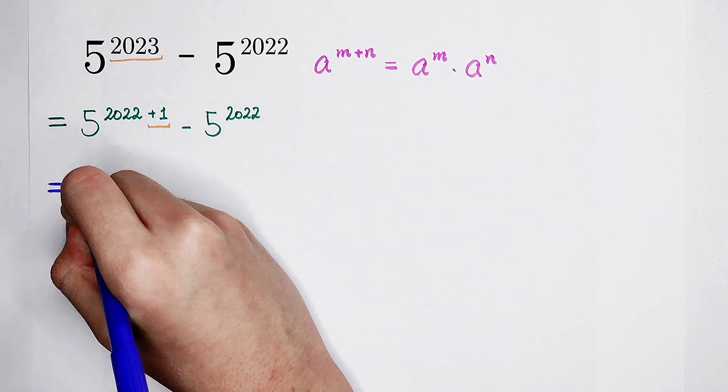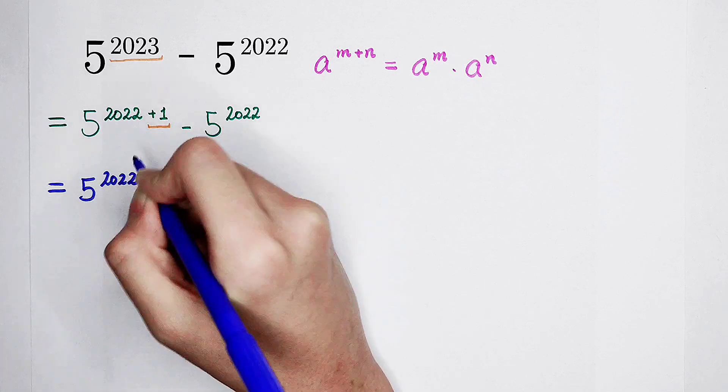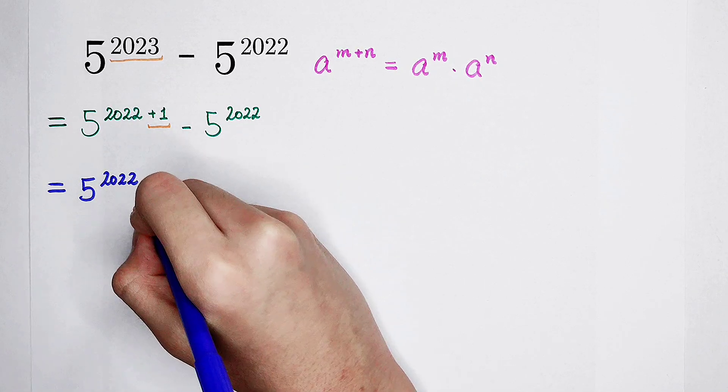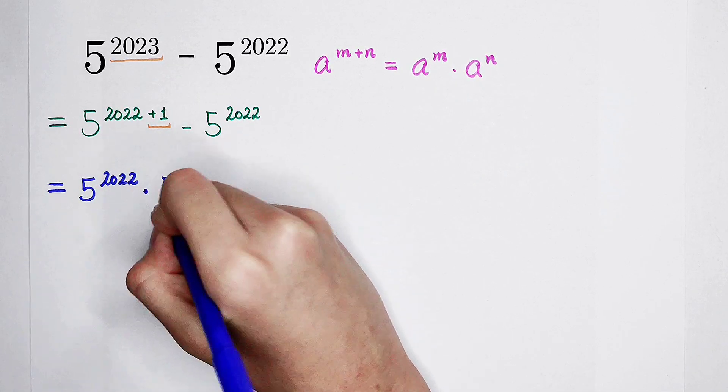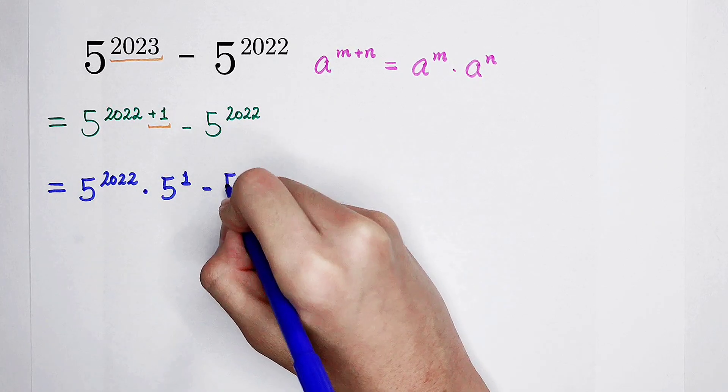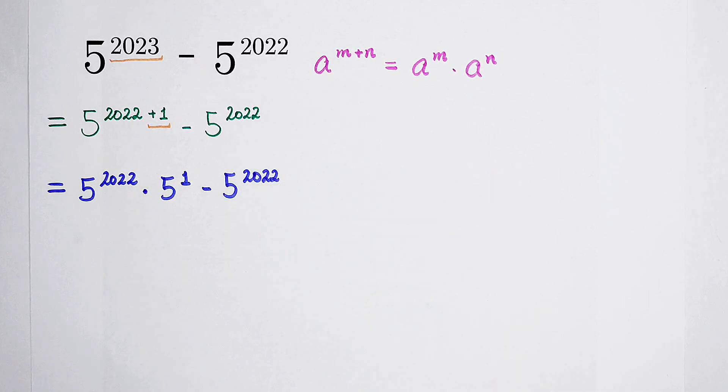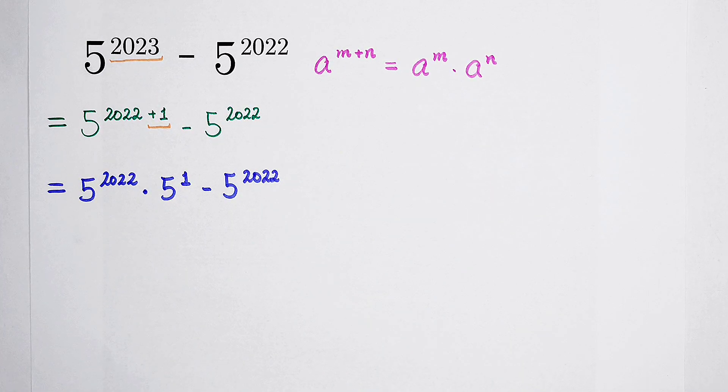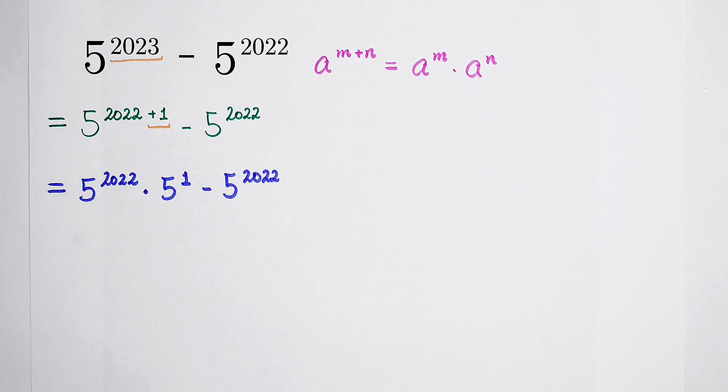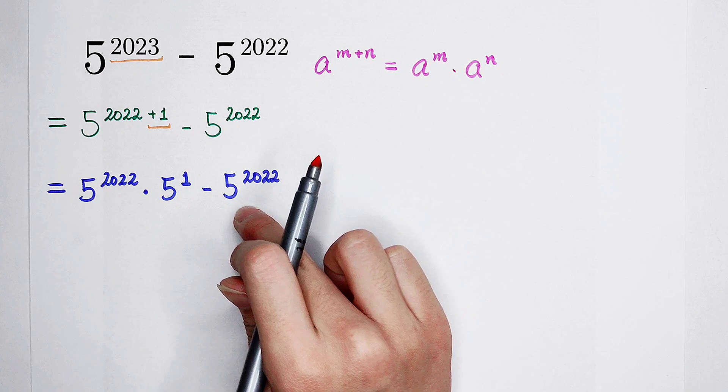5 to the power of m plus n. So let's write 5 to the power of 2022 times 5 to the power of 1, minus 5 to the power of 2022. Yes! You see that? 5 to the power of 2022 times 5 to the power of 1, minus 5 to the power of 2022.